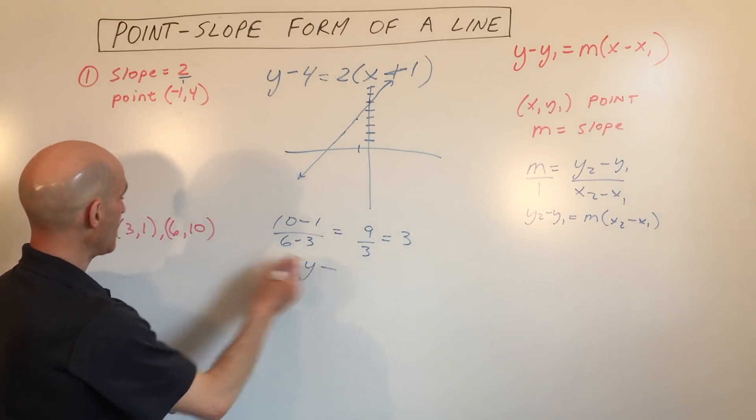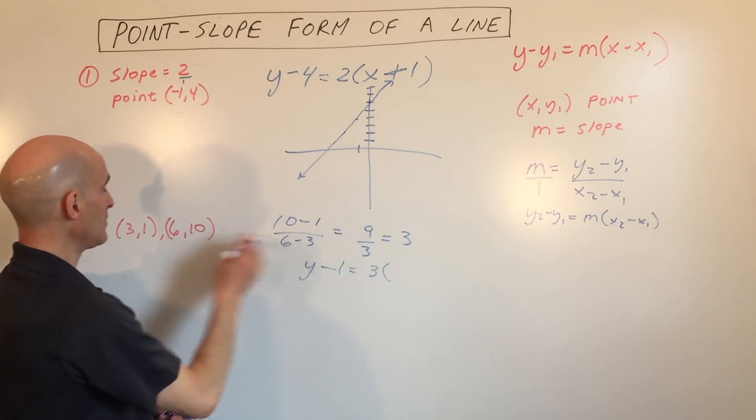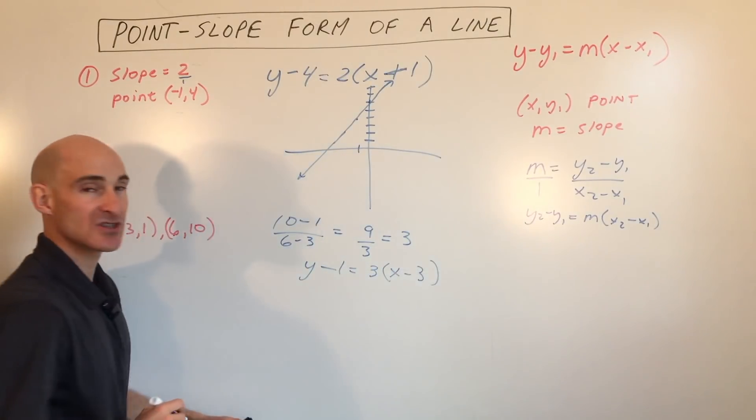We've got y minus the y-coordinate, which is 1, equals the slope, which was 3, times x minus the x-coordinate, which is 3.